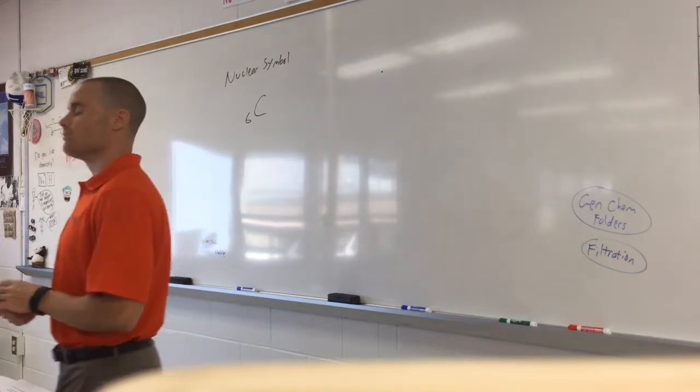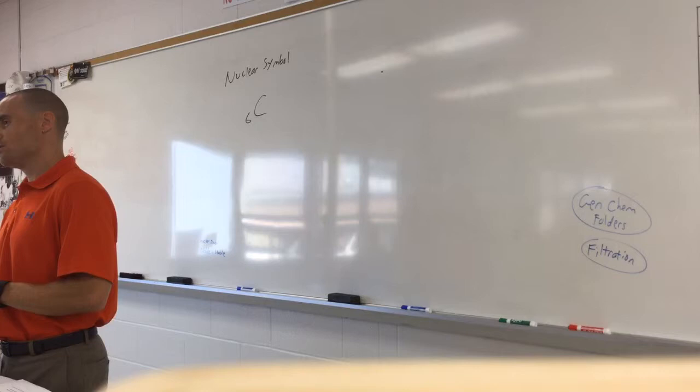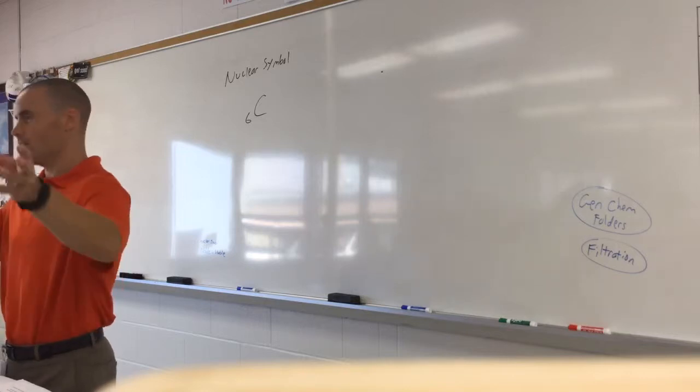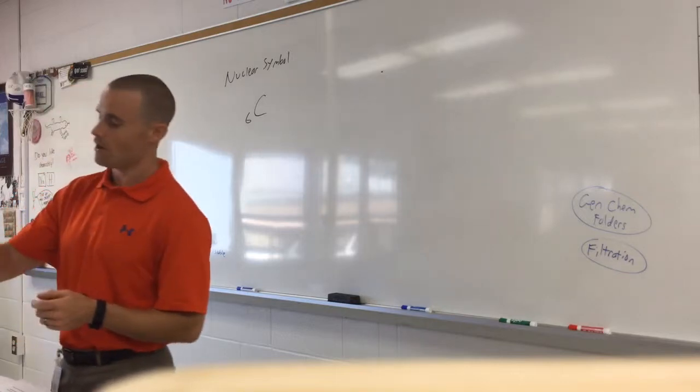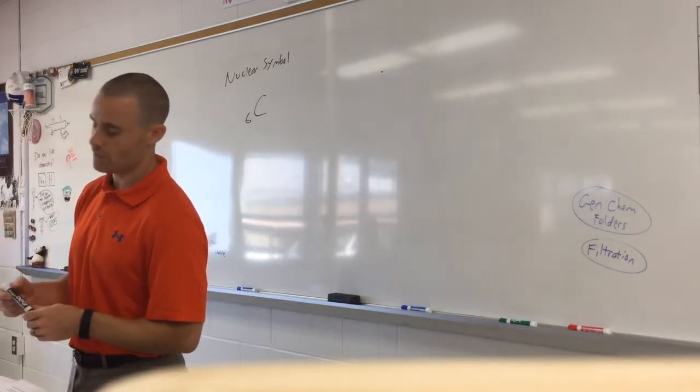12.011. Can you round that to a whole number for me? 12. So that 12 is called the mass number. Let me say that again. The atomic mass is all the decimal points, 12.011. That's called the atomic mass. But the mass number is the rounded version of that.